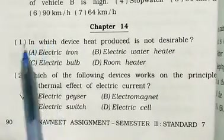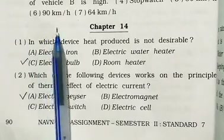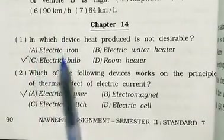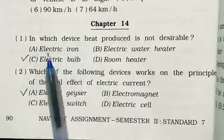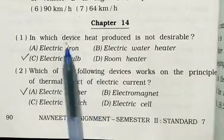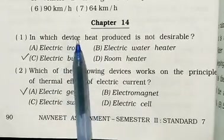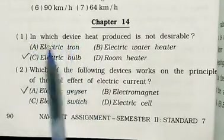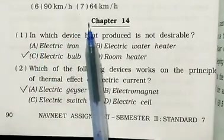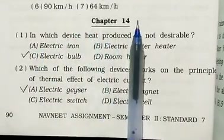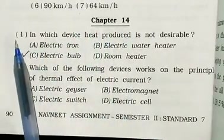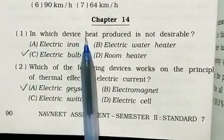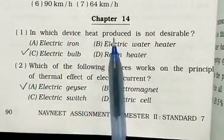Hello students, today I am going to teach you the assignment of second semester examination 2021. The subject is science. We come to chapter number 14, book number one: in which device is heat produced that is not desirable?